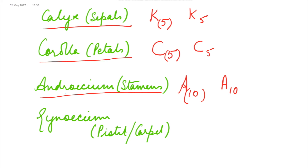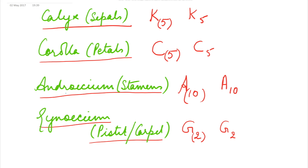The innermost part of the flower is the gynoecium, made up of pistil or carpels, written in abbreviated form as G, with the number of carpels written below. If the condition is syncarpous — that is, carpels are united — a bracket is given. If the carpels are free (apocarpous), there is no bracket. If the ovary is superior, a line is drawn below the letter G; if the ovary is inferior, a line is drawn above the letter G.